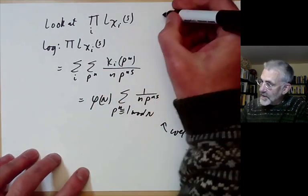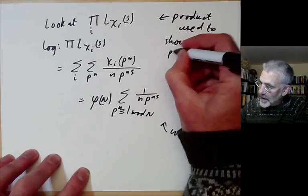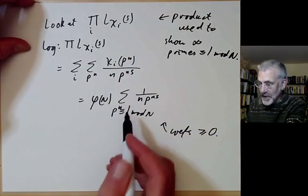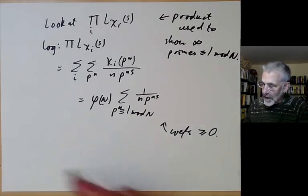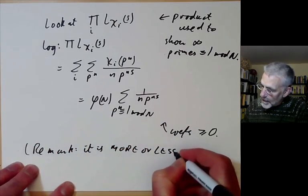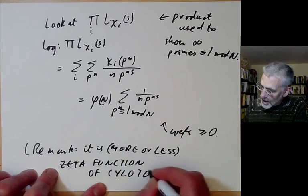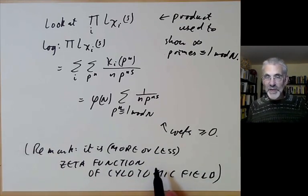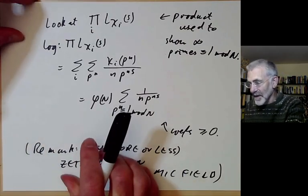This product is exactly the one used in the previous lecture to show there are infinitely many primes congruent to 1 mod N — so it's not a new product; we're just noting it has non-negative coefficients. We can also remark that it is more or less the zeta function of a cyclotomic field. Explaining what a cyclotomic field is and what its zeta function is is a very interesting topic, but it's not suitable for an introductory number theory lecture and takes many hours, so I'll leave it as a mysterious comment.